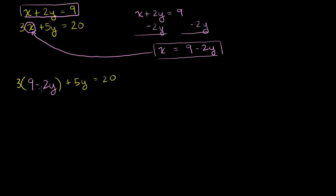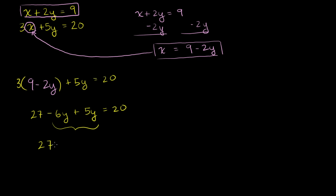Now I have one equation with one unknown, and I can solve for y. 3 times 9 is 27. 3 times negative 2 is negative 6y, plus 5y is equal to 20. Add the negative 6y plus 5y — you have 27 minus y is equal to 20.